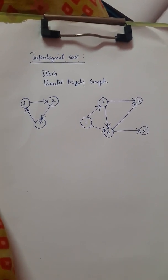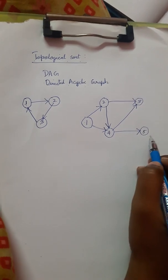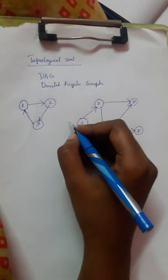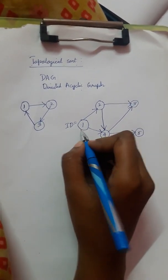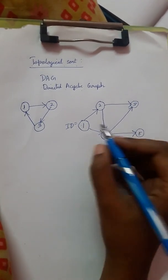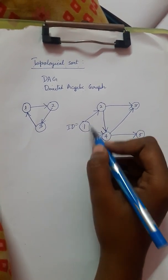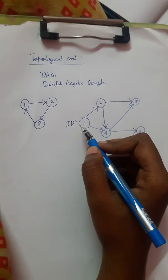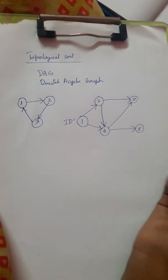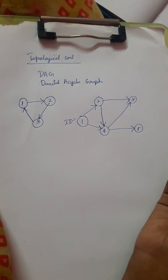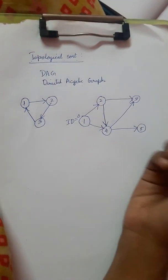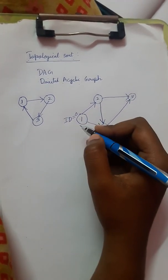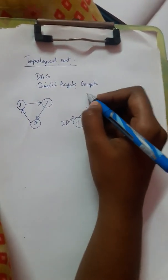For topological sorting, first we need to find the in-degree for each and every node. In-degree means how many inward arrow marks are coming into that node. For node 1, no inward direction is coming, so the in-degree for 1 is 0.